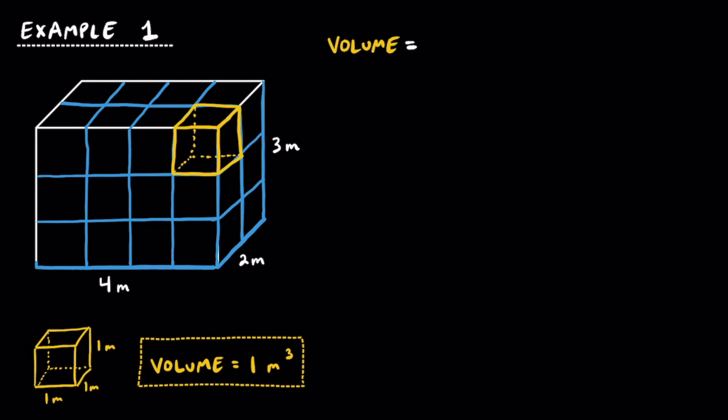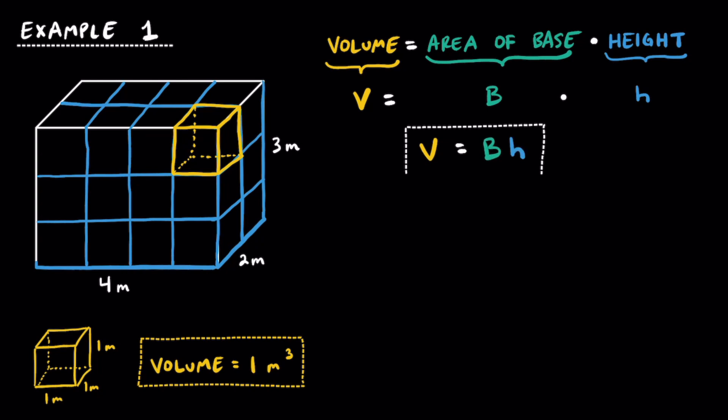To find the volume of any prism, you multiply the area of the base by the height of the prism. Typically, capital V will represent the volume, capital B will represent the area of the base, and lowercase h will represent the height of the prism. Simply put, capital V is equal to capital B times lowercase h. Because we're dealing with a rectangular prism and the base is a rectangle, and we can find the area by multiplying the length and width, we can substitute in length times width for capital B.